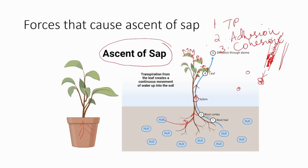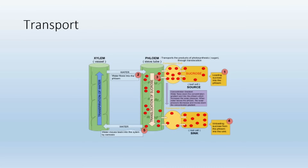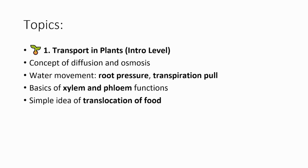The upward movement of water is called ascent of sap, and we've learned the three reasons why it happens: transpirational pull, adhesion, and cohesion. In upcoming classes we will learn how roots absorb water, what is root pressure, the structure and function of xylem and phloem, and how food gets translocated. Please keep watching, keep learning, and put any doubts in the comments below. Thank you.